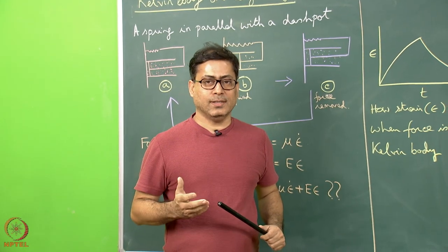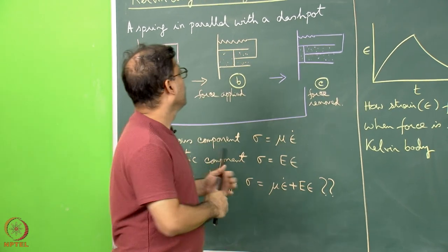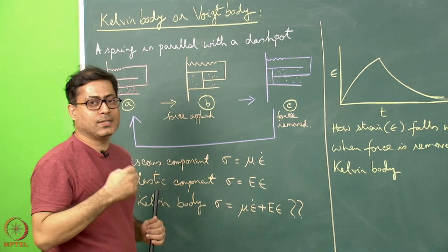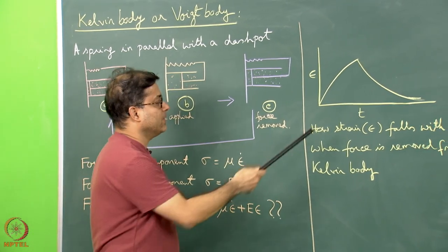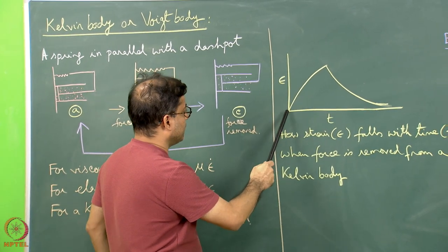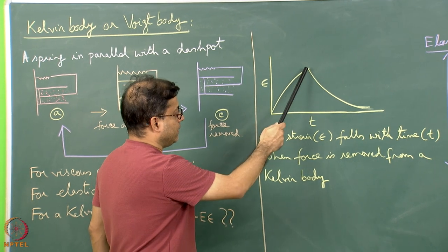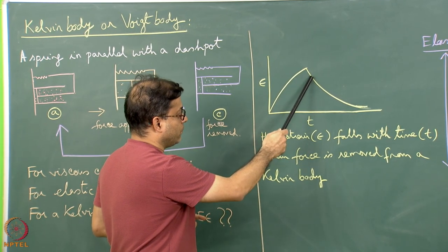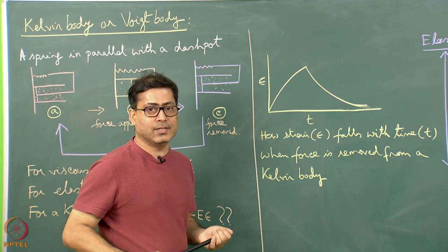Now consider the situation where the applied stress is dropped and how strain falls with time. This can be represented in a strain versus time curve. Initially, strain increases with time, but it decreases when stress is removed. So these two phases are dissimilar in nature.